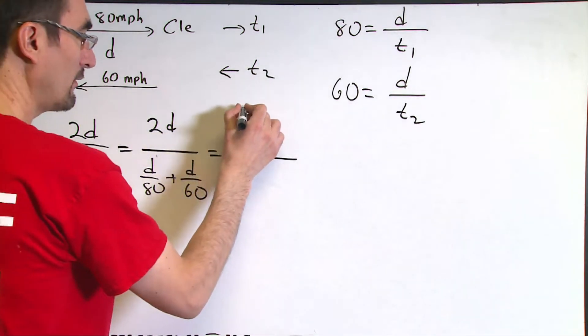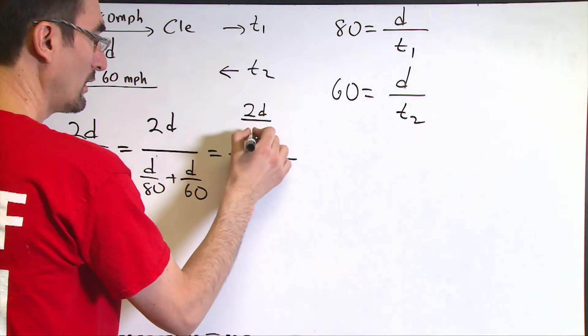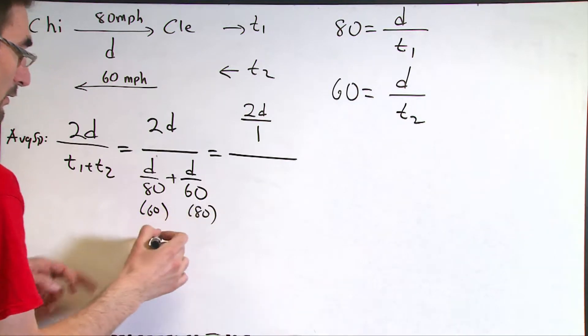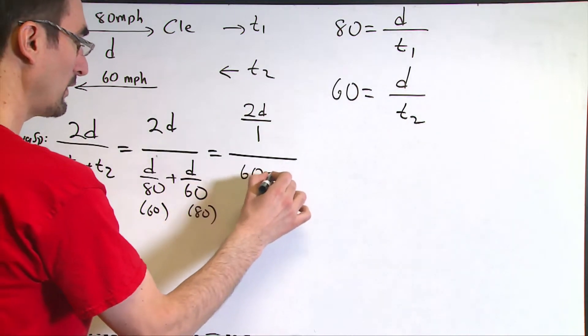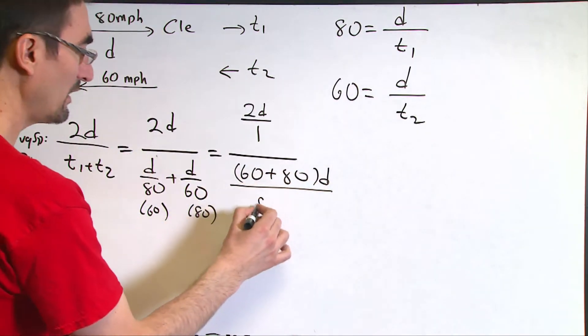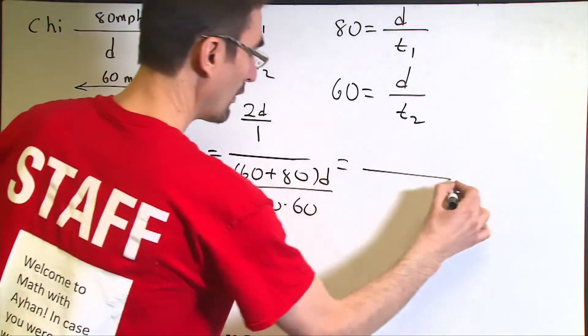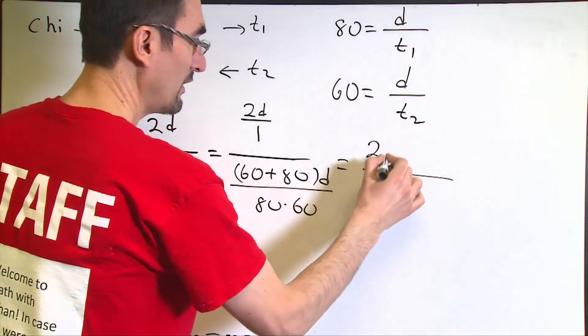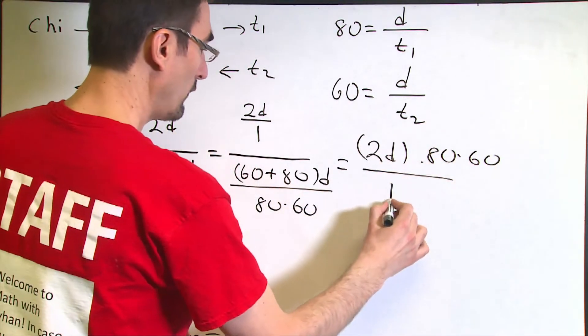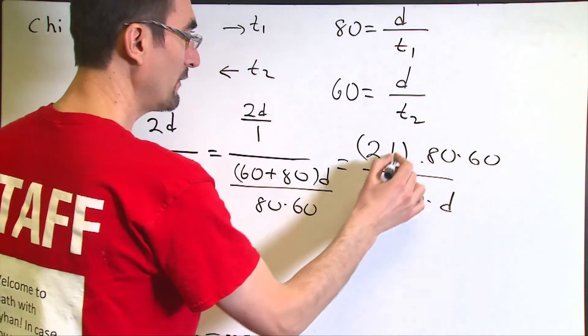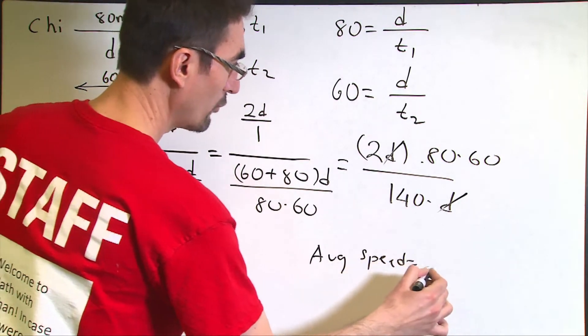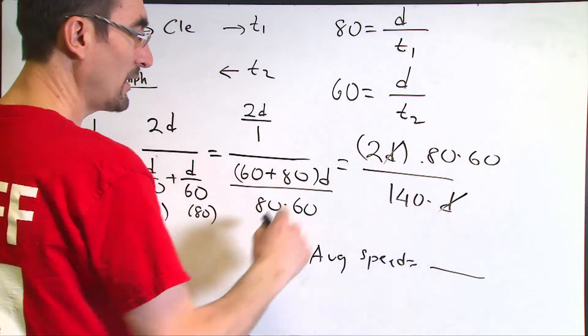So it remains just to simplify this expression and see where it takes us. I'm going to rewrite this as 2D divided by, and make the denominators equal here. That will be D over 80 plus D over 60, which I can rewrite as 2D times 80 times 60 divided by 140 times D.